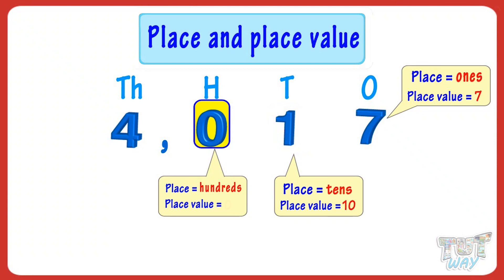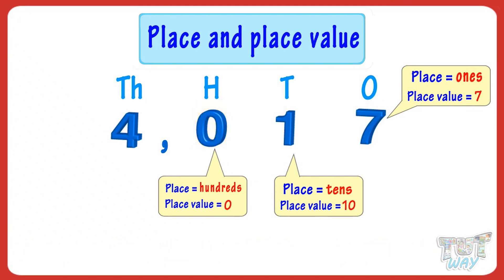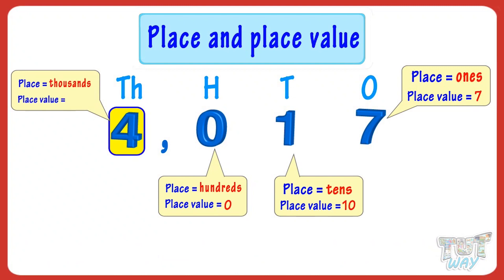No matter what place zero is in, the place value of zero is always zero. The place of four is thousands, and the place value of four is four thousands, that is four thousand.